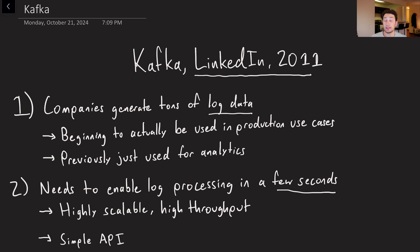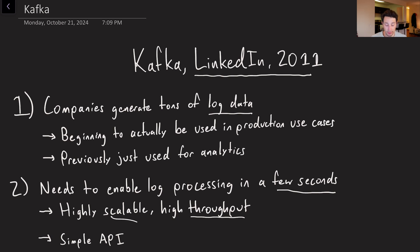What we need is to enable log processing in a few seconds. There are systems that do this at the time — there are all sorts of message brokers like ActiveMQ and RabbitMQ — but for a variety of reasons described in the paper, they just aren't good enough. Additionally, they want to make sure that their service is highly scalable, able to support a ton of throughput because we are going to be creating tons and tons of log data, and also that it has a relatively simple API to produce messages and have others consume them.